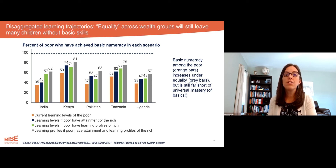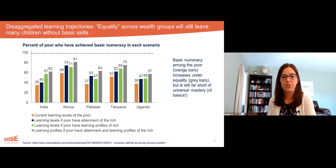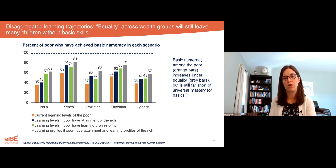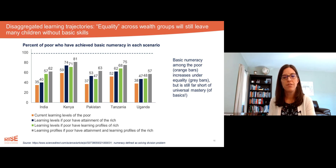The gains here are larger than for gender. In India, achieving equality of schooling and learning for the poor with the top quintile would increase basic numeracy by almost 30 percentage points up to 62%. In most countries, this kind of equality increases outcomes by about 20 percentage points.